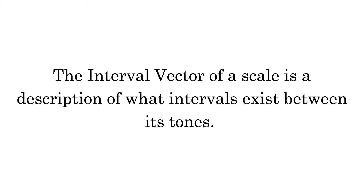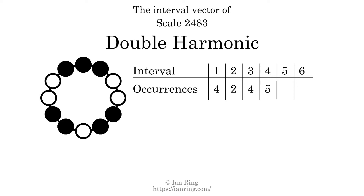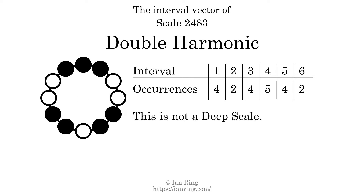The interval vector of a scale is a description of what intervals exist between its tones. There are 4 intervals of 1 semitone, 2 intervals of 2 semitones, 4 intervals of 3 semitones, 5 intervals of 4 semitones, 4 intervals of 5 semitones, and 2 intervals of 6 semitones. Each interval does not appear in this scale a unique number of times, so this is not a deep scale.